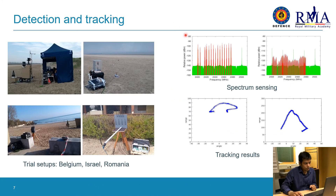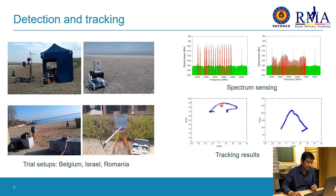In 2018, we performed outdoor trials in Belgium, Israel, and Romania. These are some of our system setups. These are the spectrum sensing results — you can see the hopping signals, the examples I showed earlier. And these are two tracking results of flying drones. This is the angle axis and this is the range — you can see the tracking of flying drones.